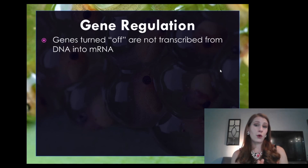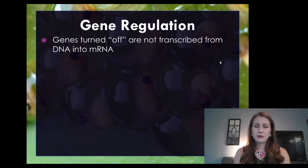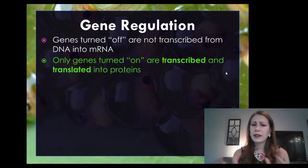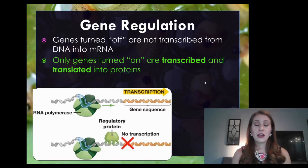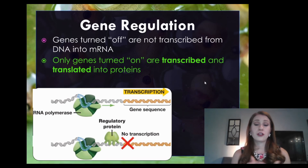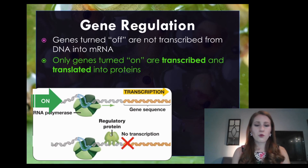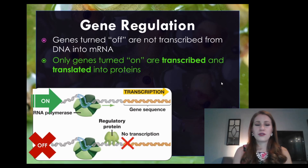Only the genes that are turned on are transcribed and translated into proteins. If a gene is supposed to be turned on, RNA polymerase goes along that gene and transcribes it into mRNA — that's when it's turned on. If a gene is turned off, it is not transcribed. A regulatory protein tends to block the progress of RNA polymerase, which doesn't allow transcription to happen, so we are not creating mRNA in that case.